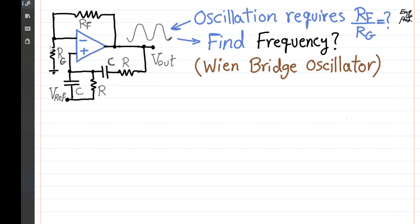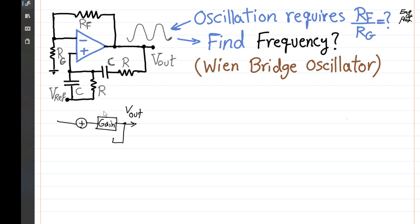That's the feedback path. We also see a gain because it's a non-inverting configuration, so the gain is well known to be 1 plus RF over RG. In summary, from the feedback idea it looks as if we have a circuit with a gain A in the feed-forward path, an output Vout, and then some feedback with transfer function B going back to the input.